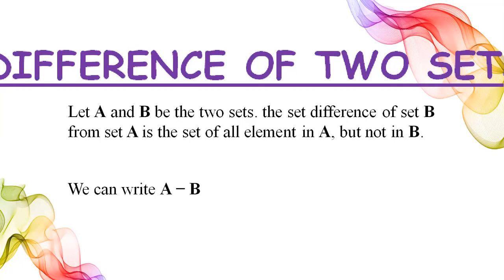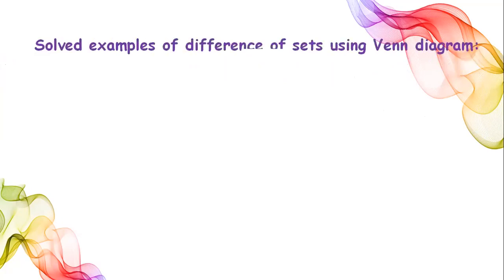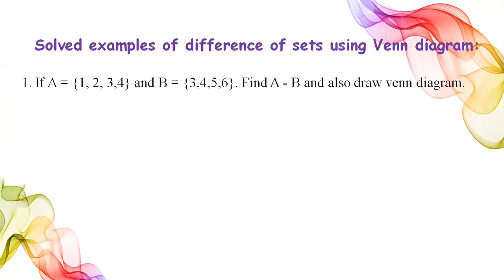We can write it as A difference B, or A minus B. Take an example: if we have set A having elements 1, 2, 3, 4 and set B having elements 3, 4, 5, 6, we need to find A minus B, and also draw the Venn diagram.